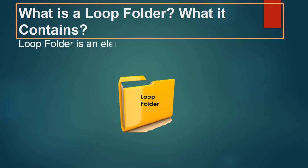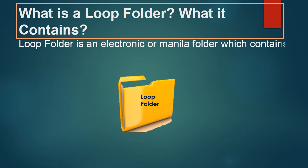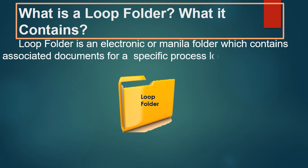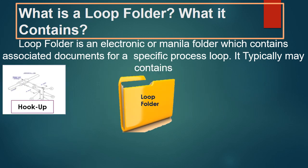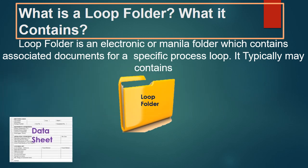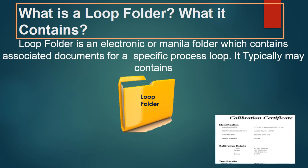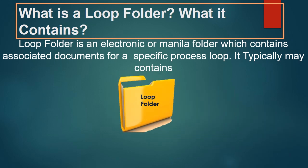What is a loop folder? A loop folder is an electronic or manila folder which contains associated documents for a specific process loop. It typically contains the P&ID diagram, hookup diagram, instrument data sheets, calibration reports, and loop diagram.